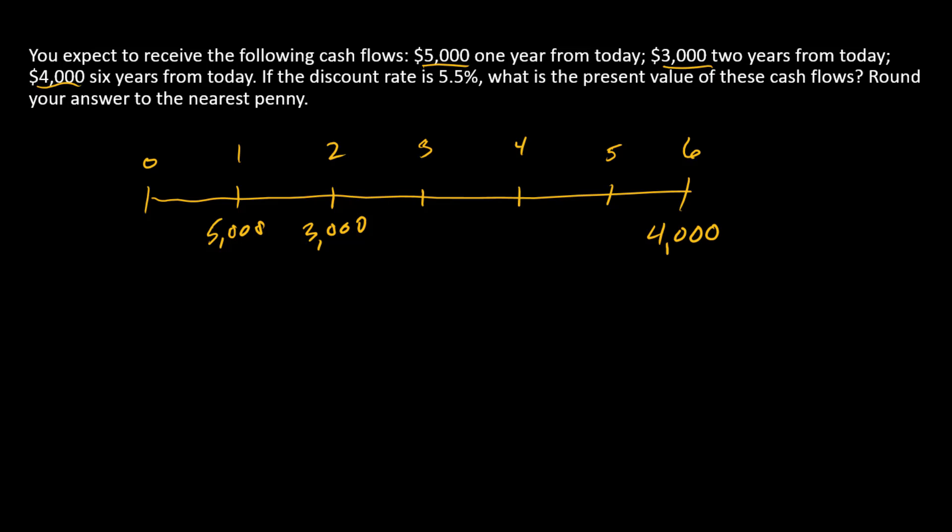Now in this problem we are asked to find the present value of these cash flows. So we're looking for PV at time zero, which is today's one-time cash equivalent of this series of cash flows. Since we're starting with cash flows in the future and calculating the present value, we need to discount.